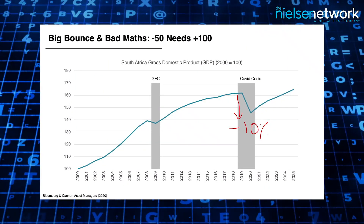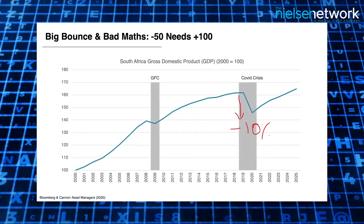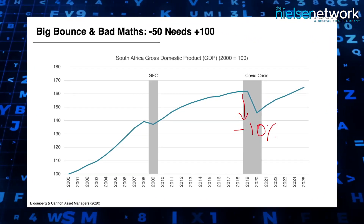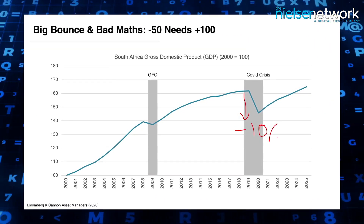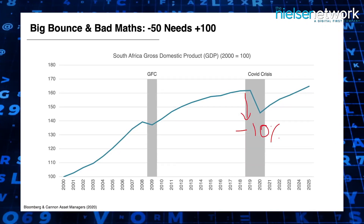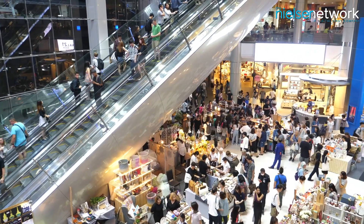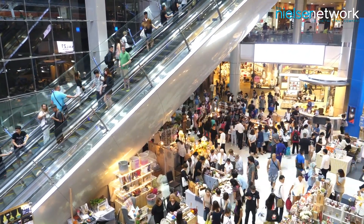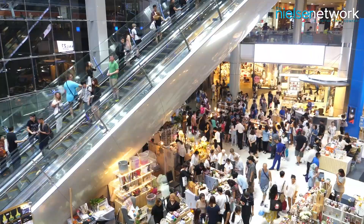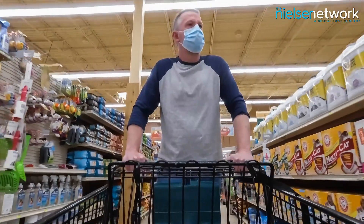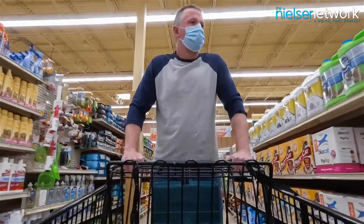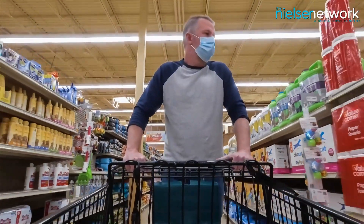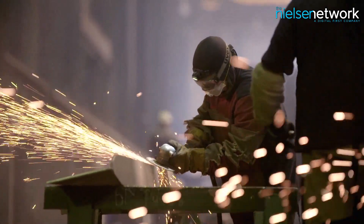If we add each of these quarters together, it is likely that South Africa finishes 2020 at minus 10. By the end of the four quarters, when all is said and done, the economy will finish the year 10% smaller than it was in 2019.